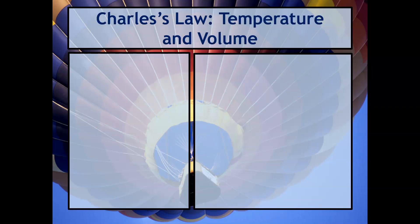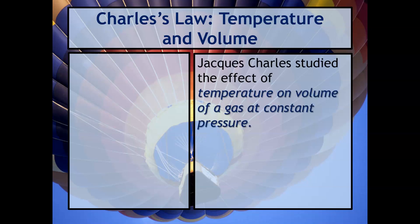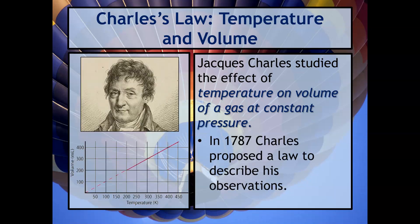Let's talk about Charles's law. Charles's law relates temperature and volume now. Jacques Charles studied the effect of temperature on volume of gas at constant pressure. There he is. If you notice, this is the graph of temperature and volume. This was in 1787 when he proposed a law to describe his observations.